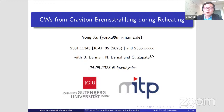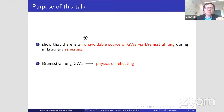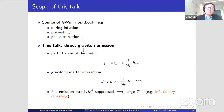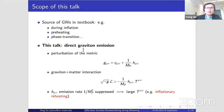The purpose of this talk will be twofold. First, I will show that there is an unavoidable source of gravitational waves from Bremsstrahlung during inflationary reheating. And secondly, I will show that the Bremsstrahlung gravitational wave can be used to say something about the physics of reheating.